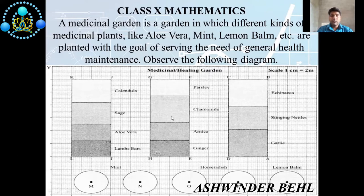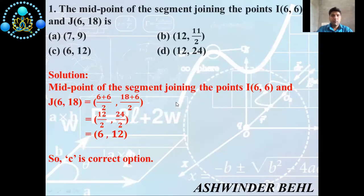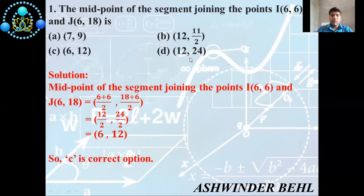First question: the midpoint of the segment joining the points I(6, 6) and G(6, 18). There are four options: (a) 7, 9; (b) 12, 11/2; (c) 6, 12; (d) 12, 24. Now we discuss the solution — midpoint of the segment joining the points I(6, 6) and G(6, 18).